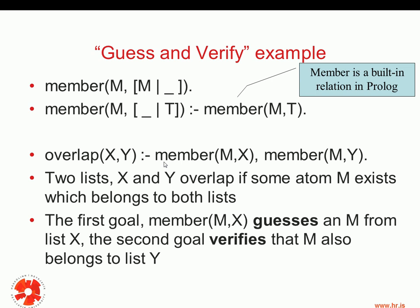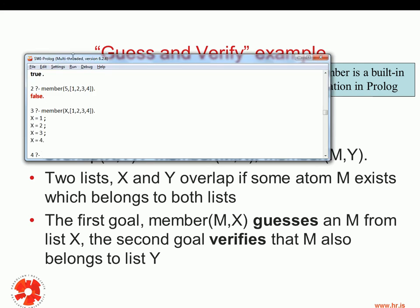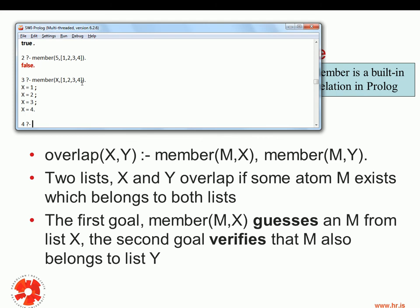This query is an example of a guess and verify query. The right-hand side rule is an example of guess and verify because this first subgoal — member(M, X) — guesses an M from the list X, while the second goal verifies that M also belongs to the list Y. Notice that when we asked a question or posted the query member(X, [1,2,3,4]), we were basically guessing all the values of X — finding all the solutions, all the members, according to the implementation of the member relation.